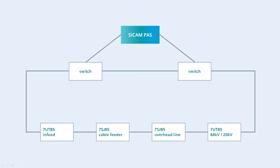In our example, all devices should communicate via IEC61850 protocol in a ring structure using RSTP, as we see it here on this graphic. As a substation automation system, we use a SciCam PAS, which we integrate in the communications network via two switches.